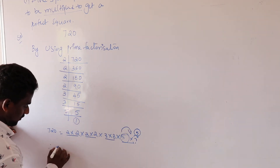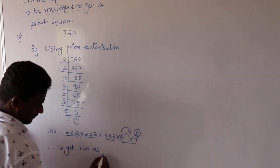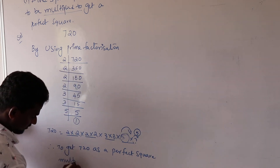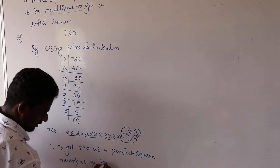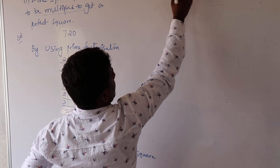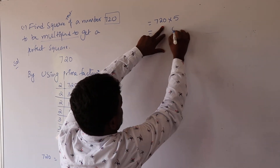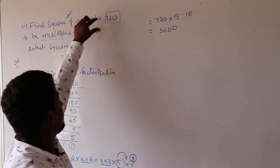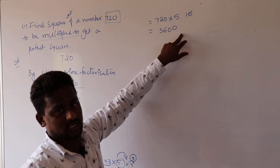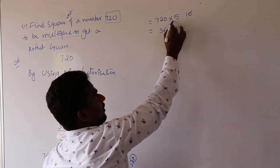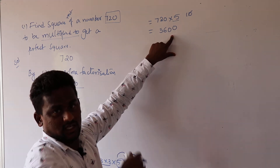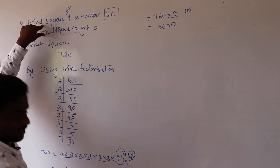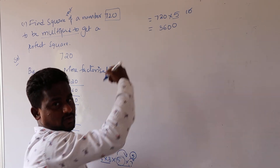Therefore, to get 720 as a perfect square, it should be multiplied by 5. 720 × 5 = 3,600. So 720 is not a perfect square, but after multiplying by 5 it becomes 3,600, which is a perfect square — it is 60 × 60. So the answer is 5.